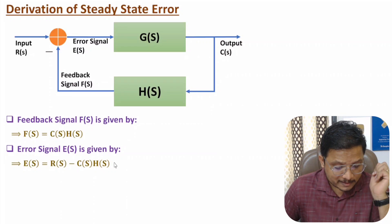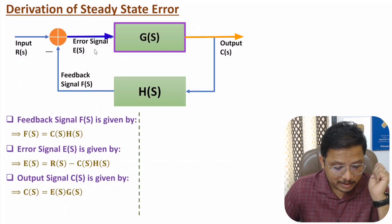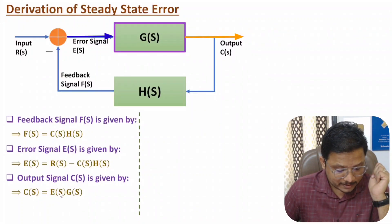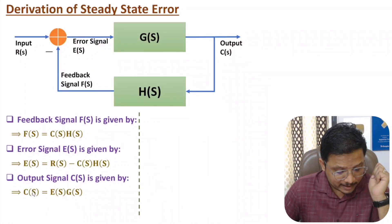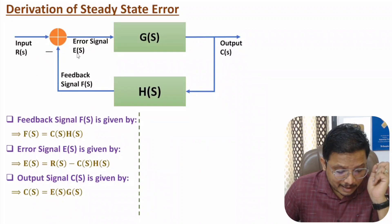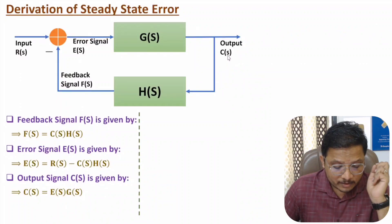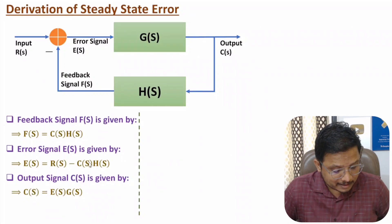Here you need to understand a few basics. The output is the input to the system multiplied by the gain of the system. So input to this system is E(s) and gain is G(s), therefore C(s) equals E(s)·G(s). To find the steady state error, we can substitute this C(s) into the error equation. We want to express the error signal in terms of input, system, and feedback — so we substitute C(s) into the equation.